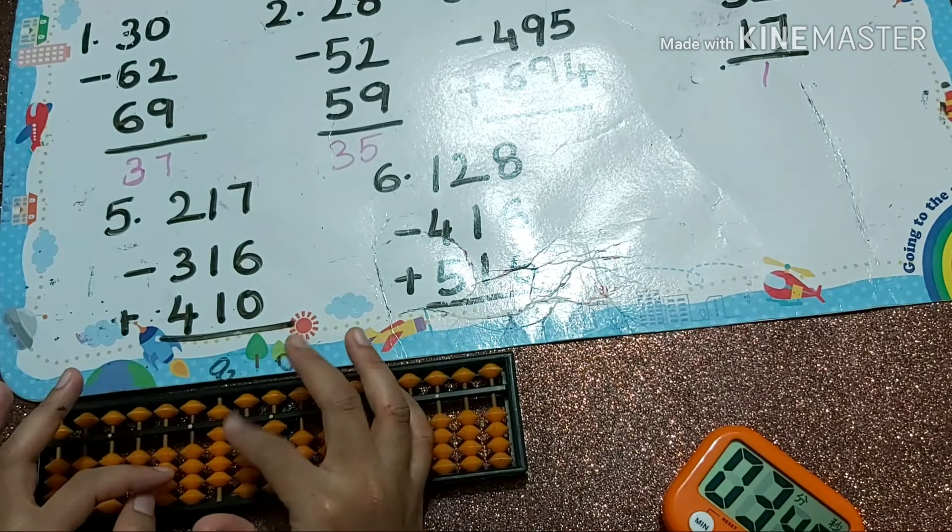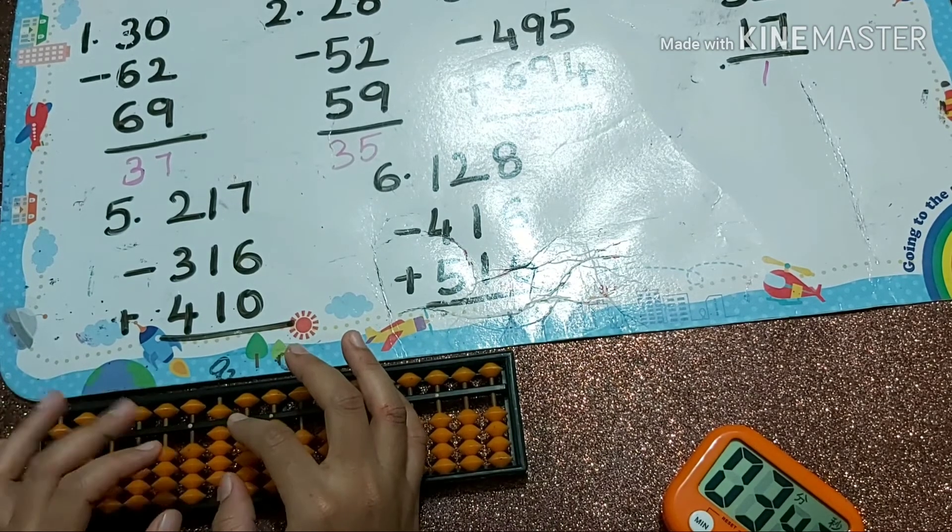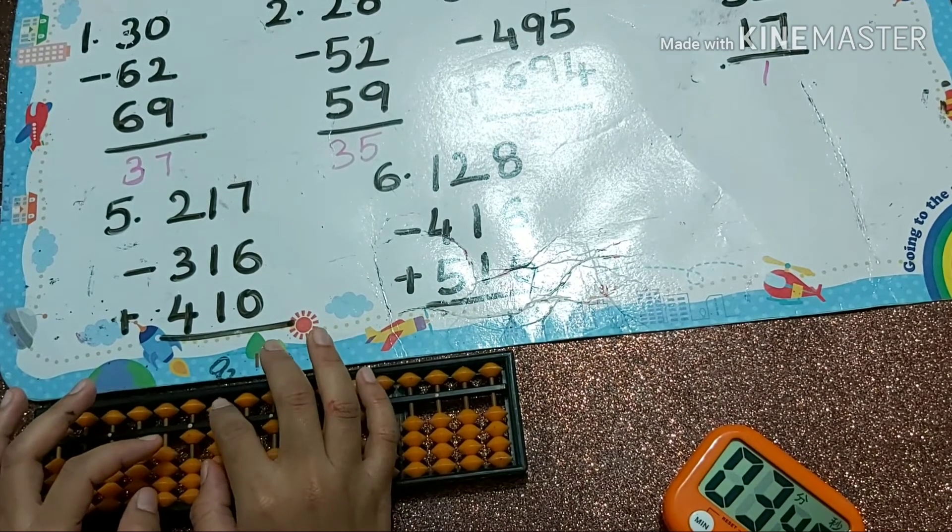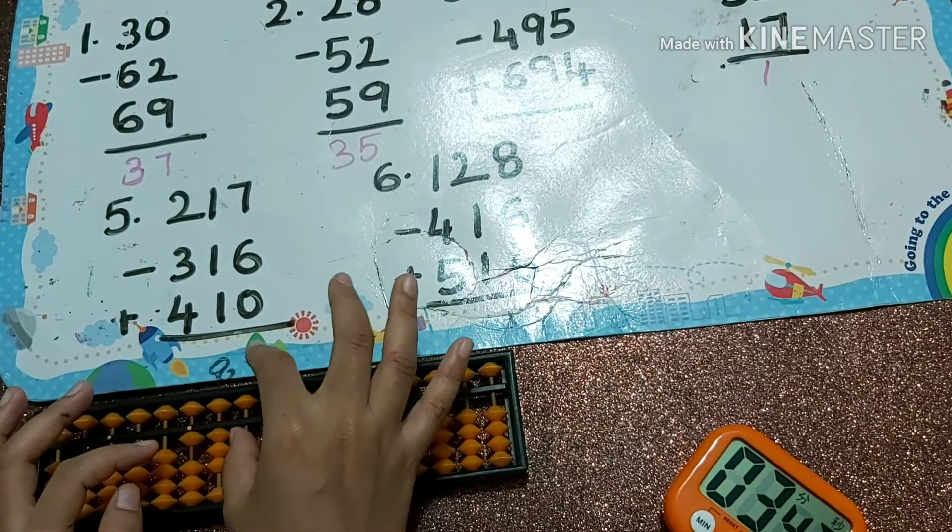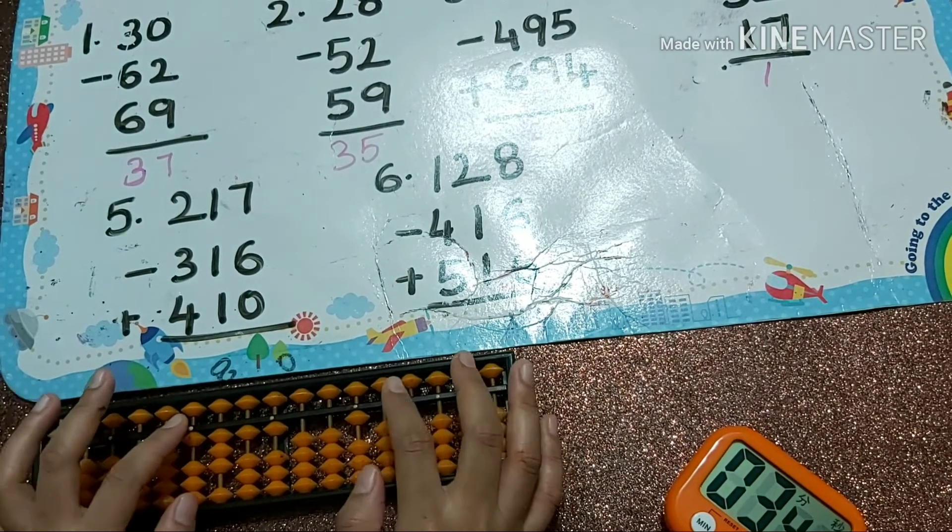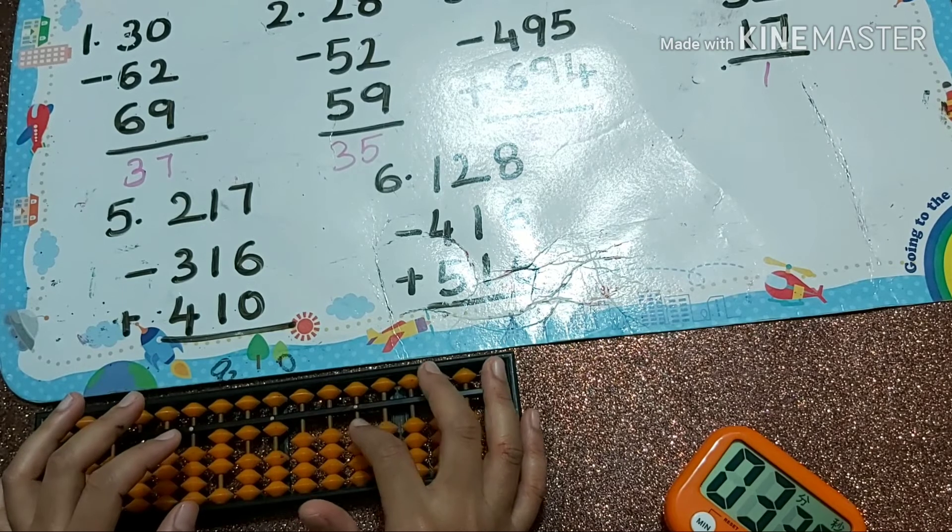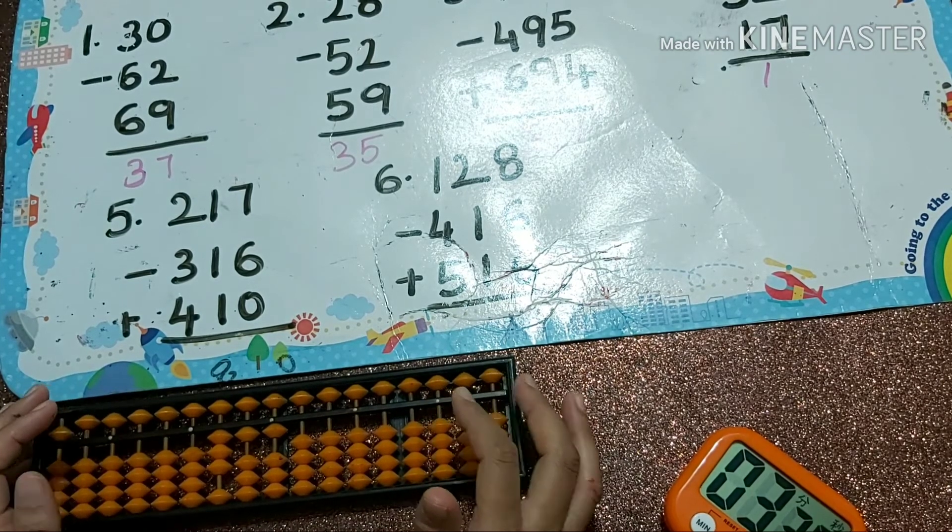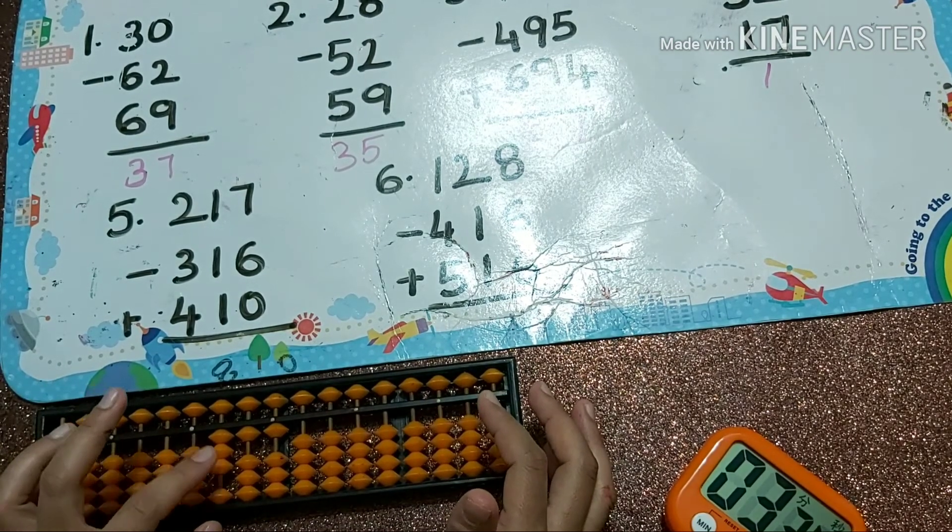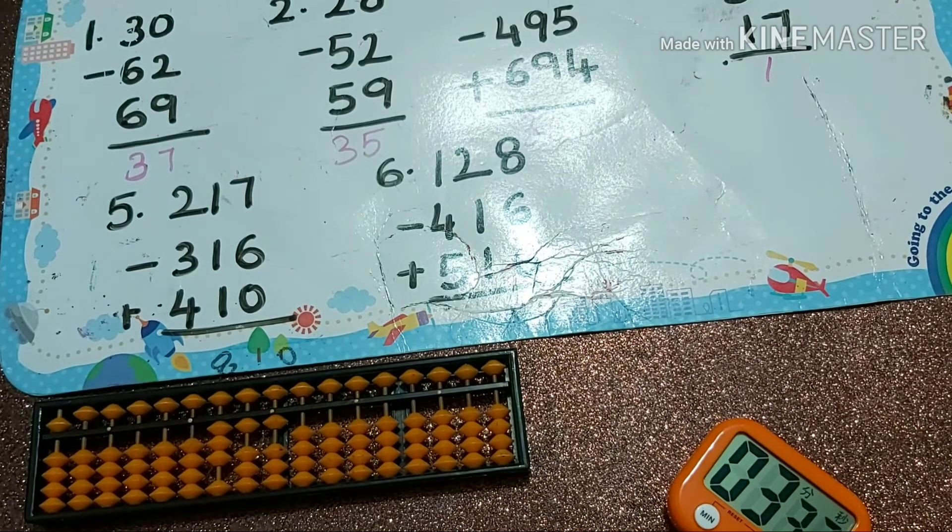Next plus 410. How to add four here in the hundreds? Plus ten minus six. Again plus one, you can do directly. So the answer is 311.